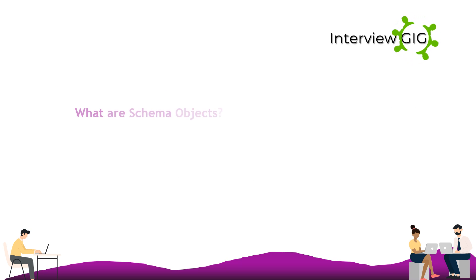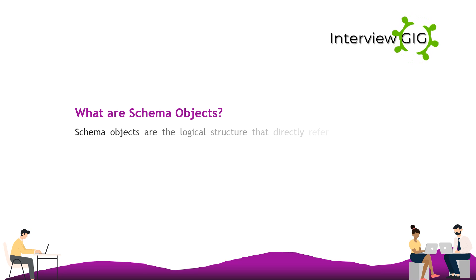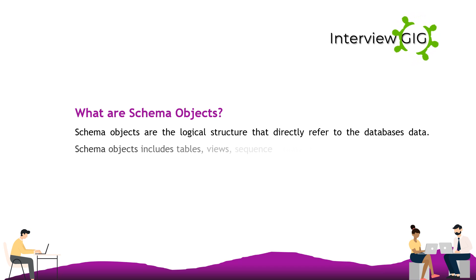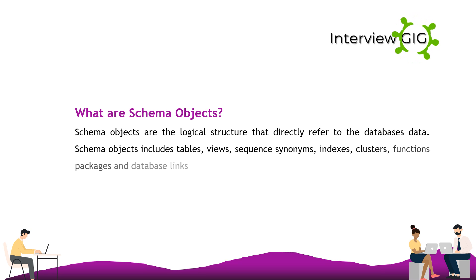Schema objects are the logical structures that directly refer to the database's data. Schema objects include tables, views, sequences, synonyms, indexes, clusters, functions, packages, and database links.